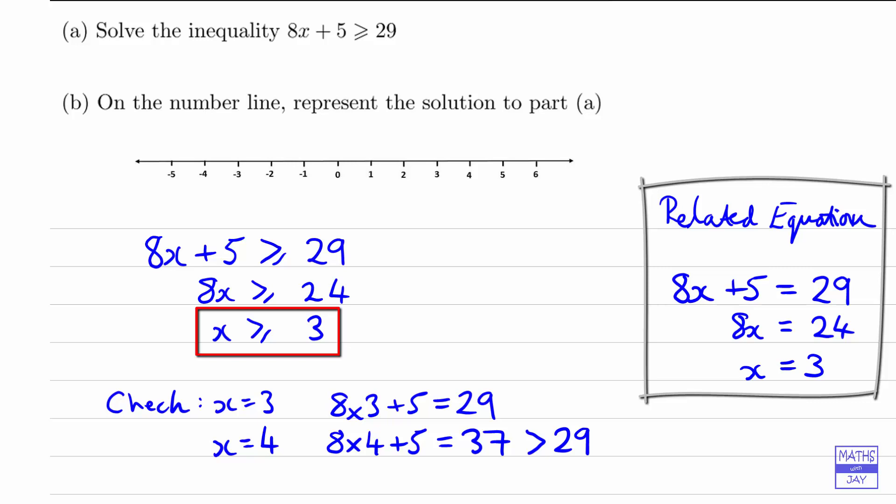So that's showing us that it looks like we have got the correct answer. Whereas if we had checked x equals 2, for example, we would expect that not to work because 2 is less than 3. And in fact, that would be the case, because 8 times 2 is only 16, and when we add 5 to that we get 21, which is less than 29.